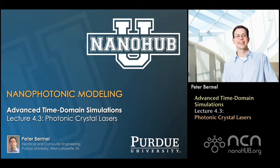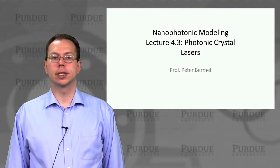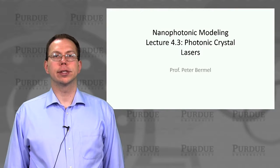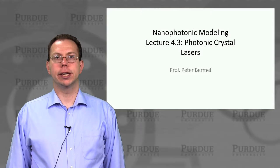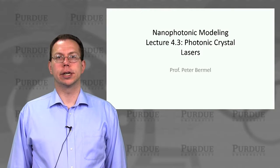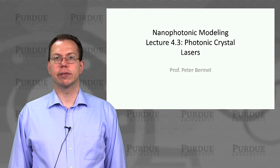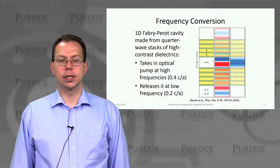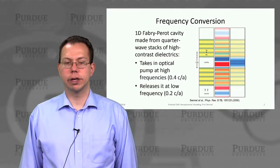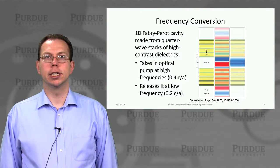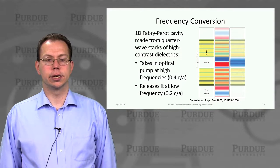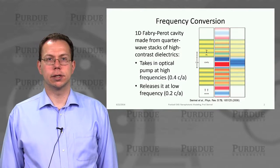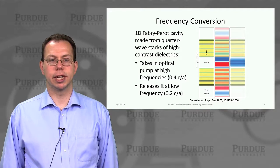Nanohub U online instruction. Hey everyone, this is lecture 4.3. In the last lecture we talked about how we can model lasers in general, and we had just started to explore what are the implications of having photonic crystals in the lasers. This is showing roughly what happens in a 1D type photonic crystal laser, oftentimes called the photonic crystal surface emitting laser.